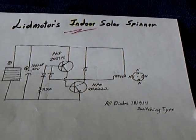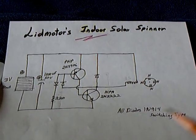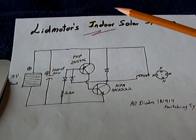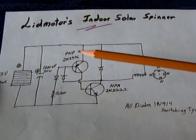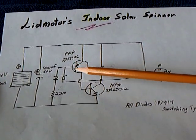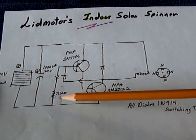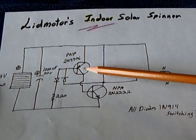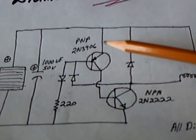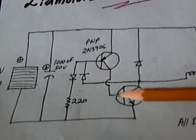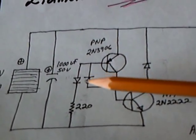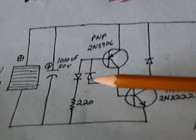This is the circuit. I fiddled around and fiddled around with this thing using all different kinds of circuits and my good buddies Mr. Trial and Mr. Error, and ended up with a diode situation here. It's a complementary NPN and PNP transistor chain with diodes, 1N914 switching diodes.